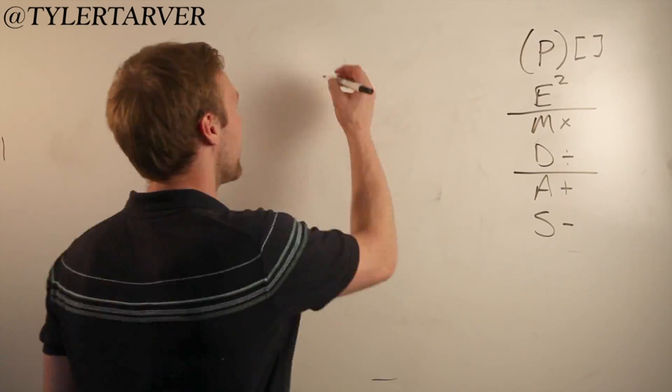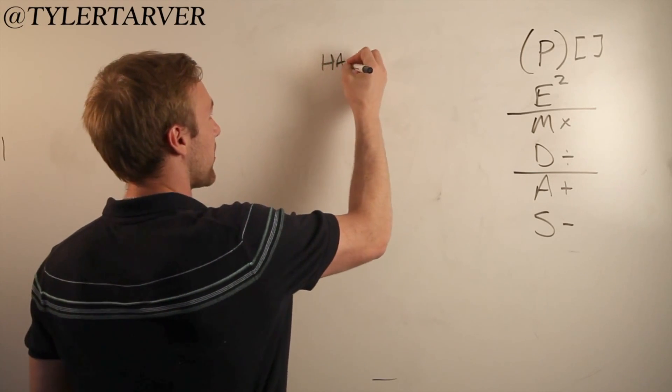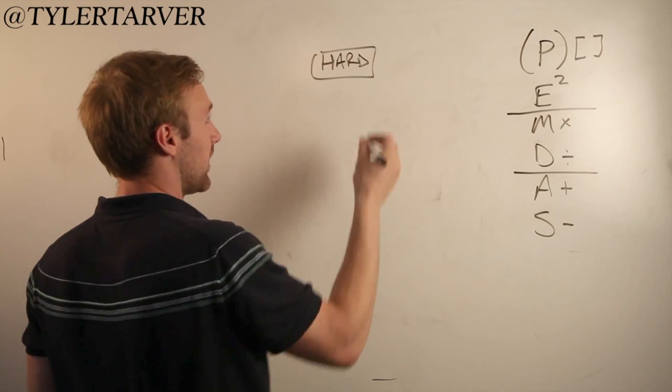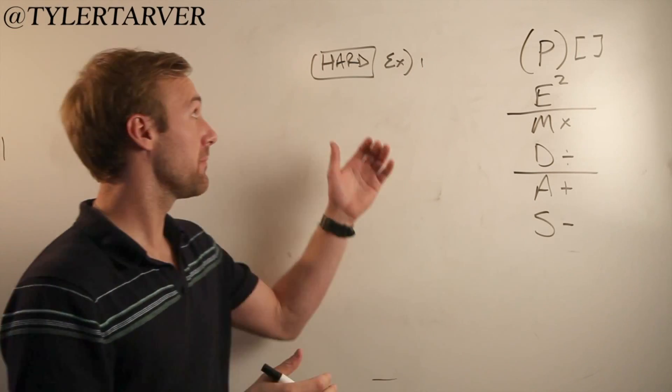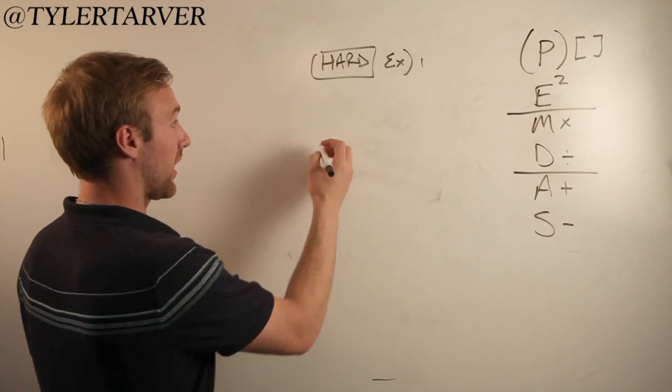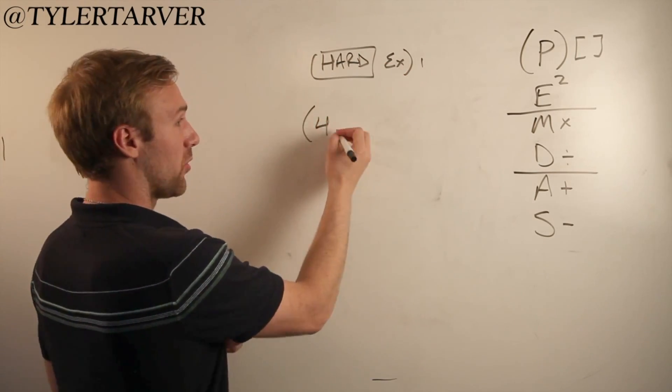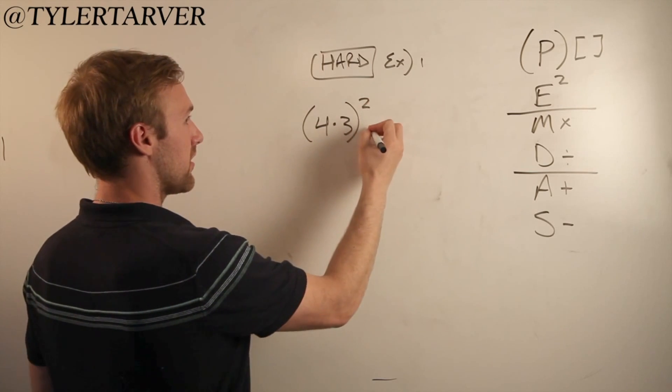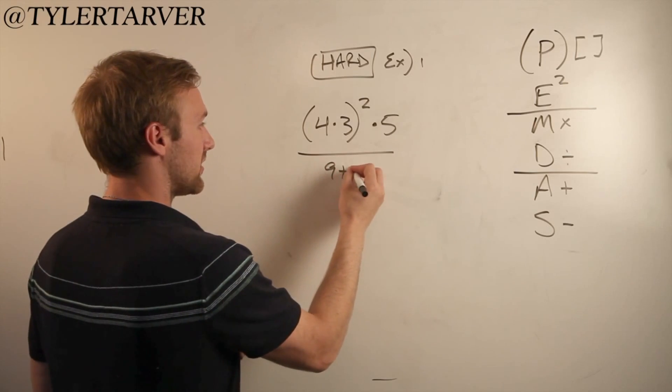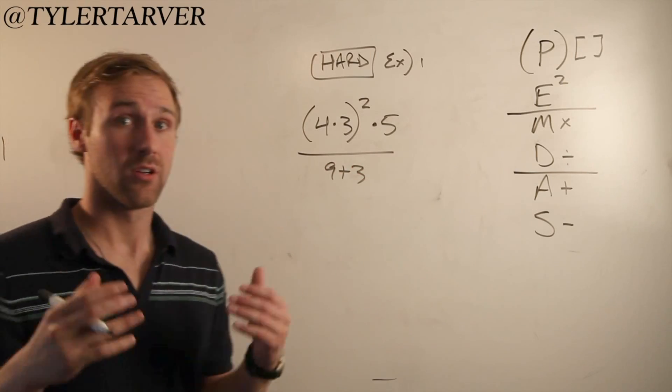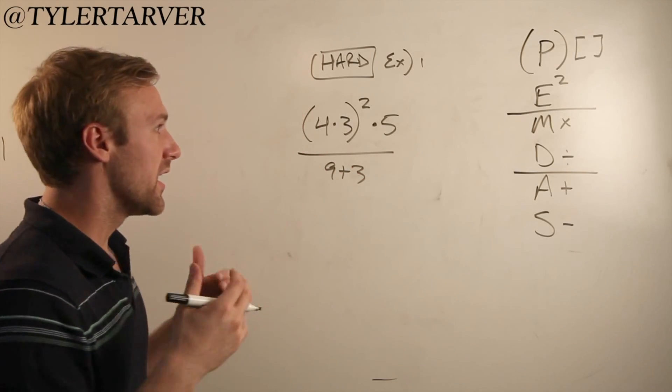Alright, okay, so we're doing a problem, a difficult version of how to do the order of operations. This is example number one. So we'll do four times three squared times five over nine plus three.